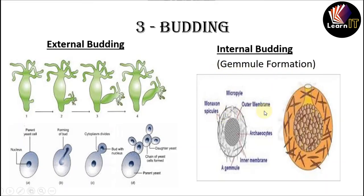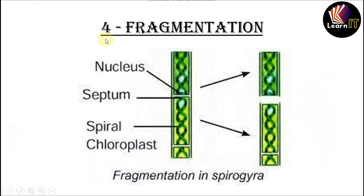Yeast also undergoes external budding. The second type is internal budding, also called gemmule formation. It is a mass of cells enclosed within a common opaque envelope rich in food, which germinates into a new individual, also called a gemmule. As you can see on the screen, they are most common in freshwater sponges, also called Spongilla.